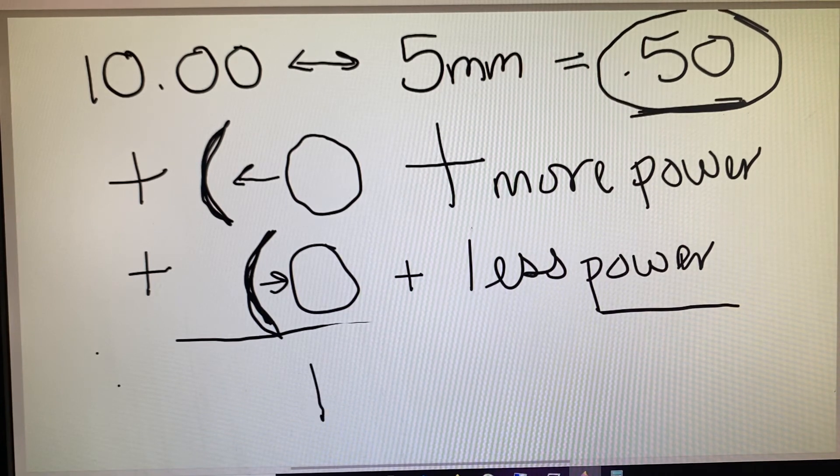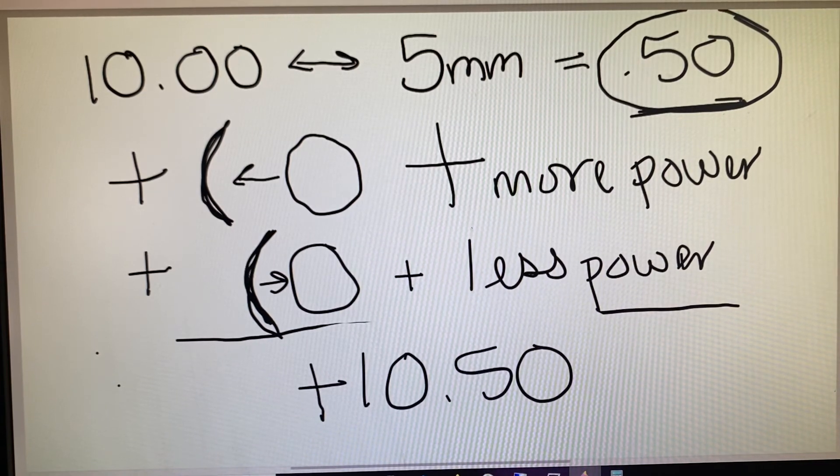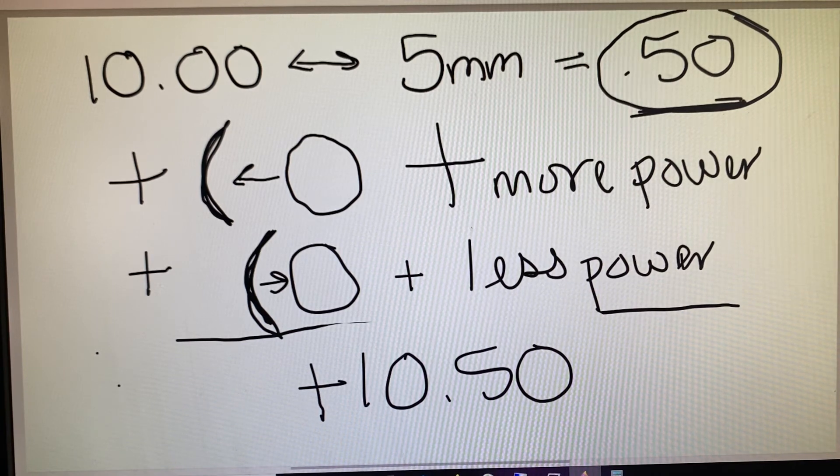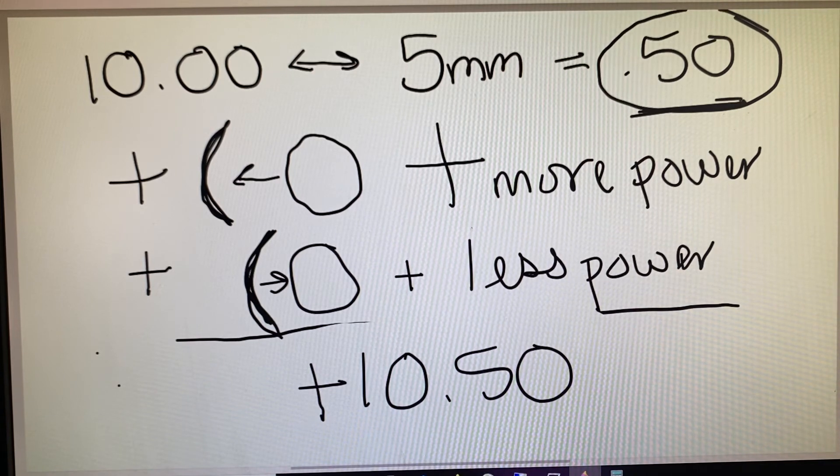So if they asked us how do we fix or how do we compensate for this five millimeters closer fitting, we would be looking for an answer of plus 10.50. So if they ask us what happened or how the patient is perceiving the prescription, we would need to take that power away from the original prescription. If they ask us how we're going to fix it or what the compensation is, then we would need to add that half a diopter to our original plus 10 prescription.